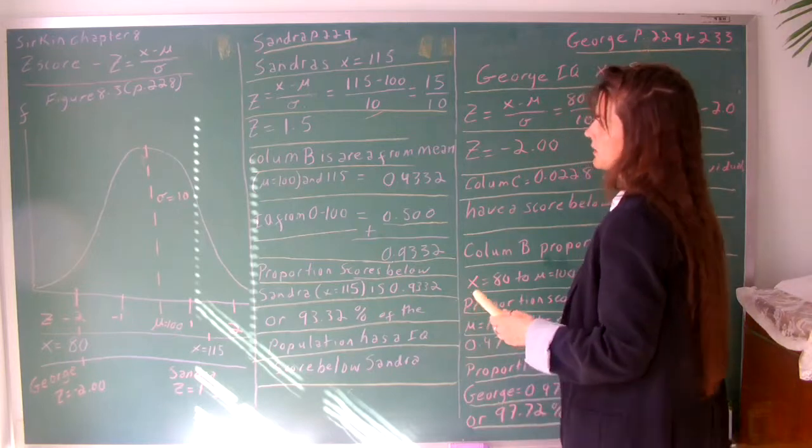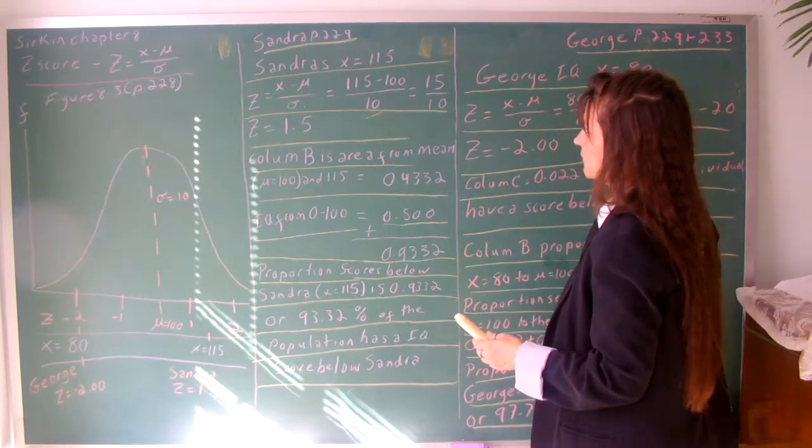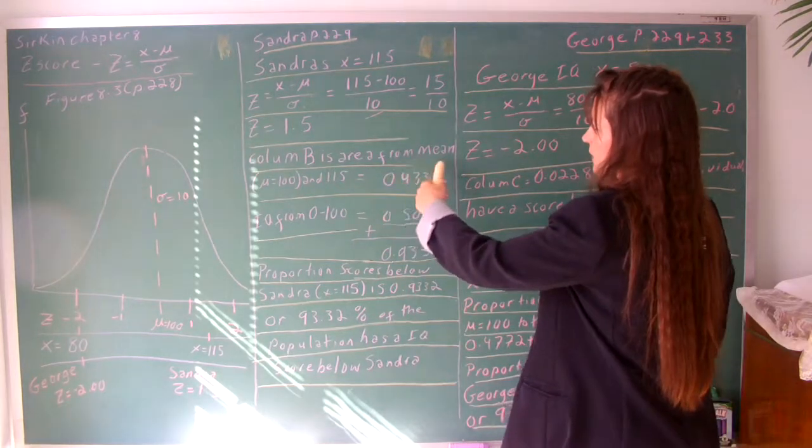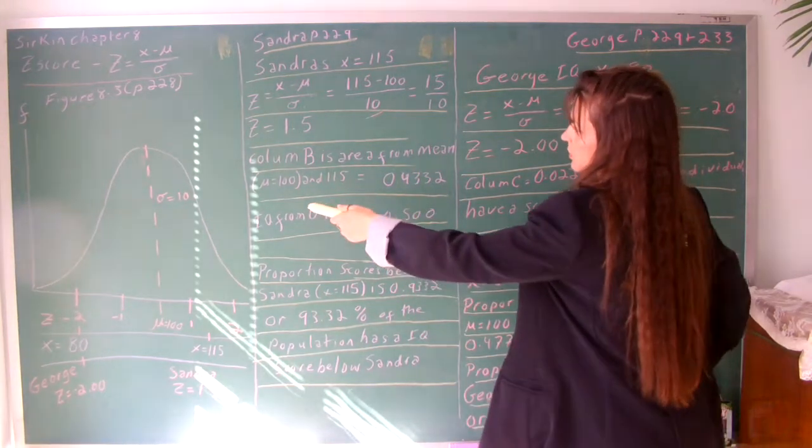Then you look at column B in your book. Column B is the area from the mean to Sandra's score.